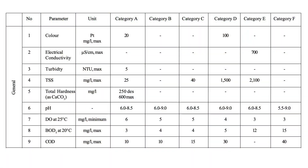The act has categorized a set of parameters into different categories. Under the general categories, they have listed color, electrical conductivity, turbidity, TSS, total hardness, pH, dissolved oxygen, biological oxygen demand, and chemical oxygen demand. These parameters were discussed in an earlier episode, so if you haven't covered them please check our previous episode. For each of these parameters under each category, the act has listed specific values.